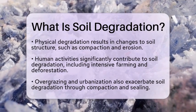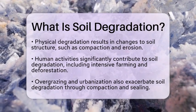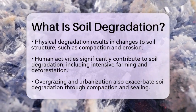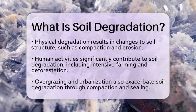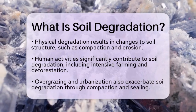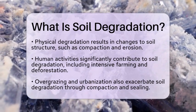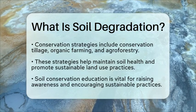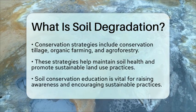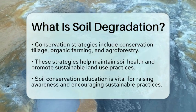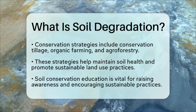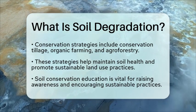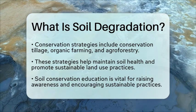To combat soil degradation, several conservation strategies can be employed. Conservation tillage minimizes soil disturbance by reducing the number of times a field is tilled, helping maintain soil cover with crop residues, which reduces erosion. Organic farming focuses on using natural fertilizers and minimizing synthetic inputs, helping to maintain soil biodiversity and organic matter. Agroforestry, which integrates trees into farming systems, can stabilize soil and increase organic matter. Maintaining vegetation or crop residues on the soil surface protects it from erosion and helps retain moisture.